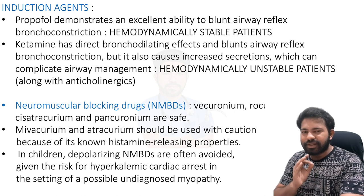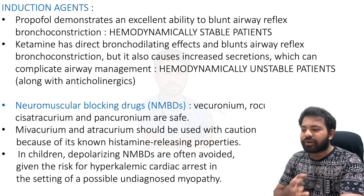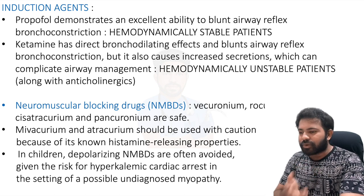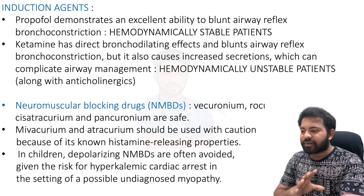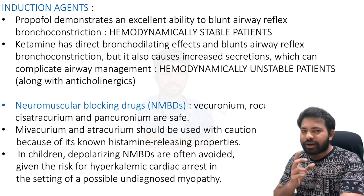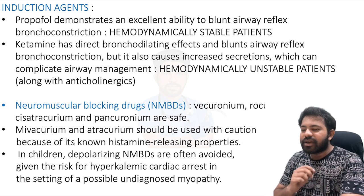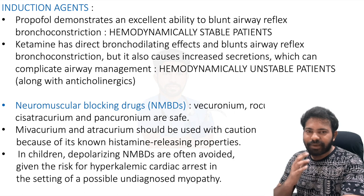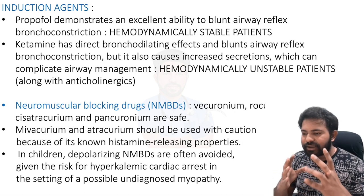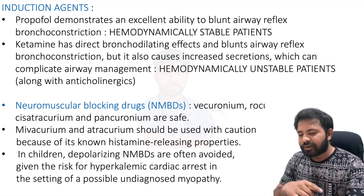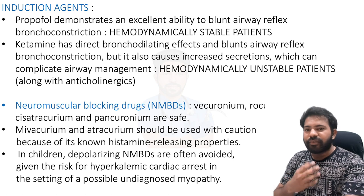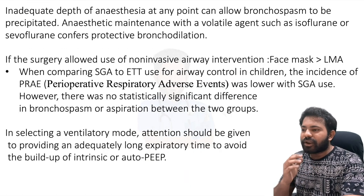For neuromuscular blocking drugs: vecuronium, rocuronium, cisatracurium, and pancuronium are options. Atracurium and mivacurium should be used with caution as they are known to cause histamine release. In children, depolarizing agents like succinylcholine are often avoided due to the risk of hyperkalemic cardiac arrest if there is an undiagnosed myopathy — rocuronium can be used instead for rapid sequence induction.